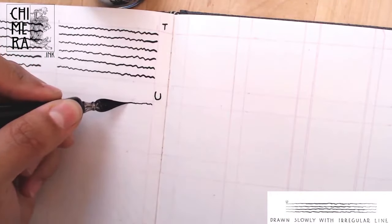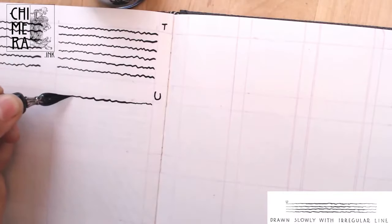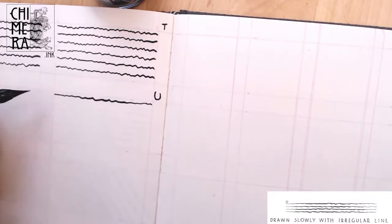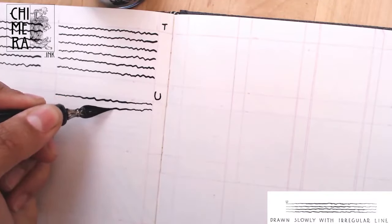U starts thin, goes thick, and thin again. This is a good one to go really slow, so you can totally see and pay attention to the control of your pressure. The more gradual it is, the nicer it will look.